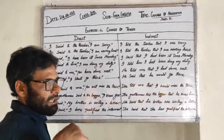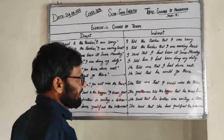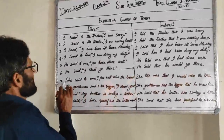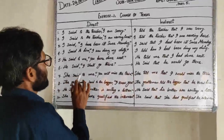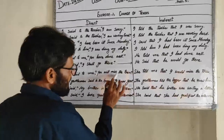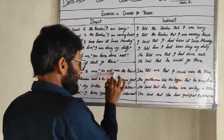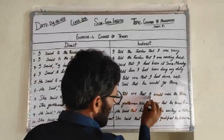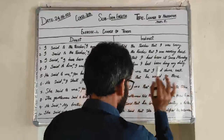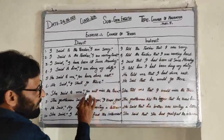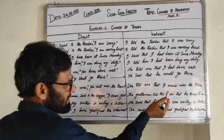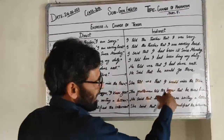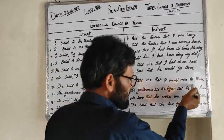Sentence 7: She said to me you will miss the train → She told me that I would miss the train. Here 'you' (second person) changed to 'I' (first person), and the future tense changed to past — 'will' became 'would'.